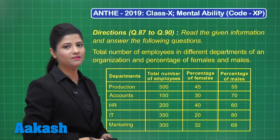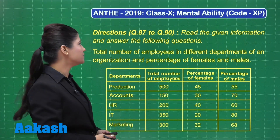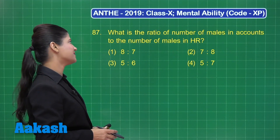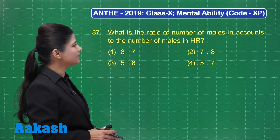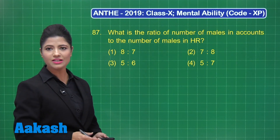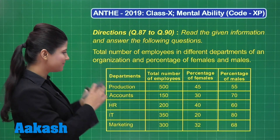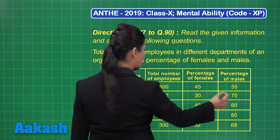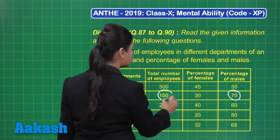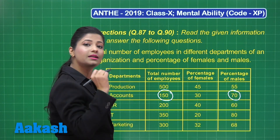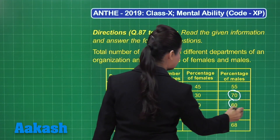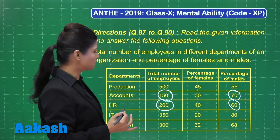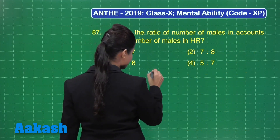Let's take up question number 87. It states: what is the ratio of the number of males in Accounts to the number of males in HR? From the given data, the number of males in Accounts is 70% of 150 and the number of males in HR is 60% of 200. We need to obtain the ratio of these two.